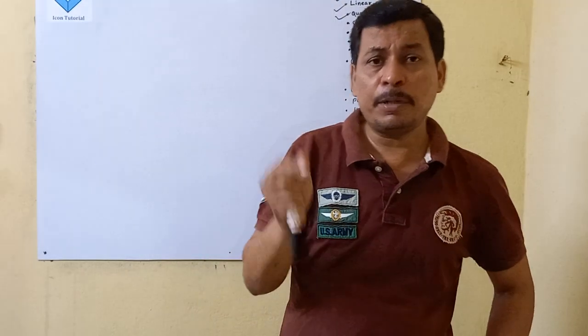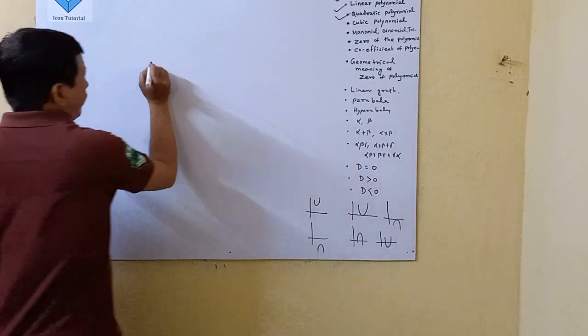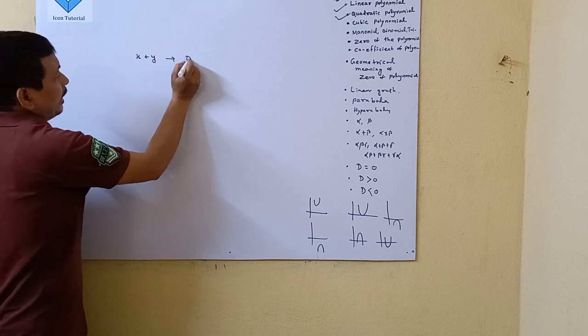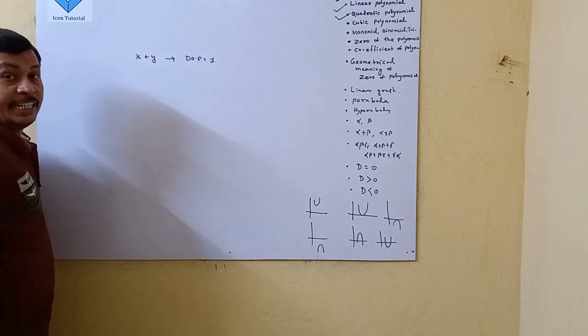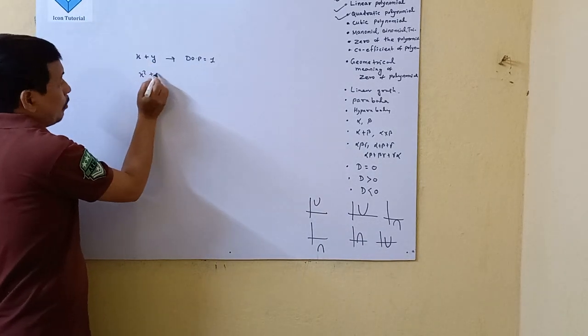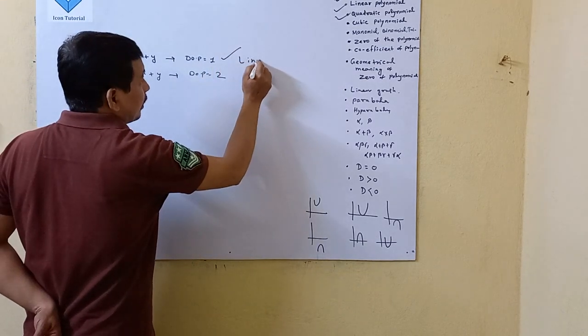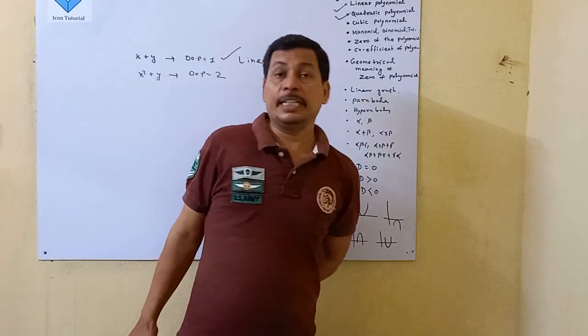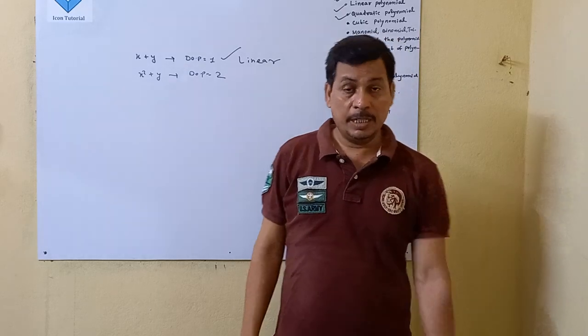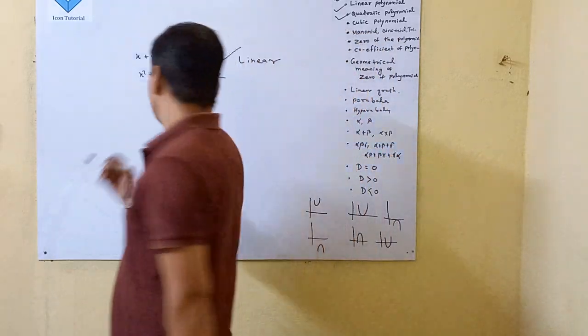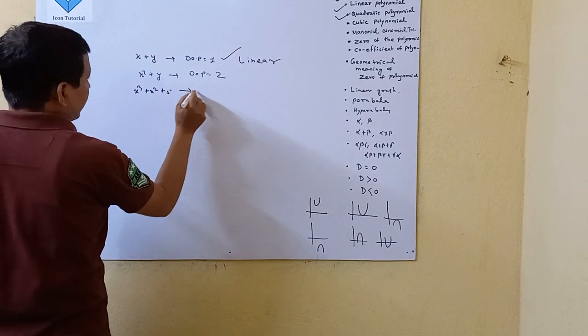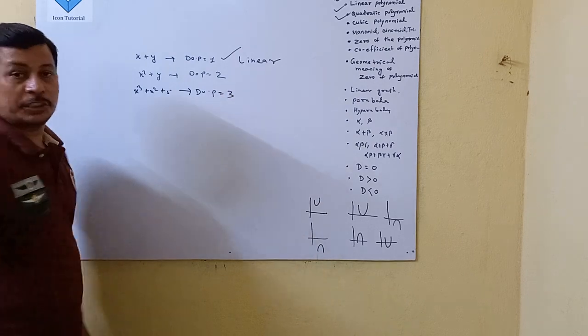Now we will discuss linear polynomial. What is a linear polynomial? If the degree of polynomial is 1, that is a linear polynomial. For example, x plus y — here the highest degree is 1. Now x squared plus y, the degree of polynomial is 2, so that is a quadratic polynomial. And x cubed plus x squared plus 5x, the degree of polynomial is 3, so that is a cubic polynomial.